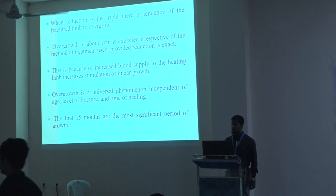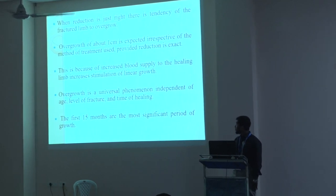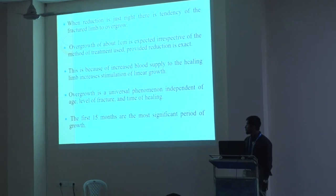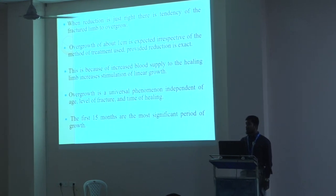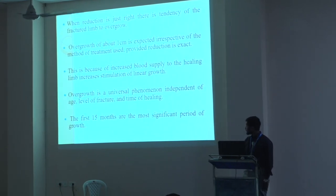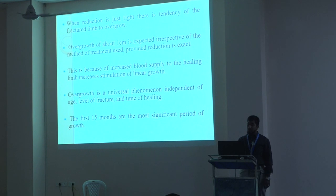When reduction is anatomical, the fracture tends to show overgrowth. Overgrowth of 1 cm is expected irrespective of the type of treatment — whether open reduction, closed reduction, or conservative. This is due to increased blood supply to the healing bone, which increases linear bone growth. Overgrowth is a universal phenomenon, independent of the age, level of fracture, and time of healing.